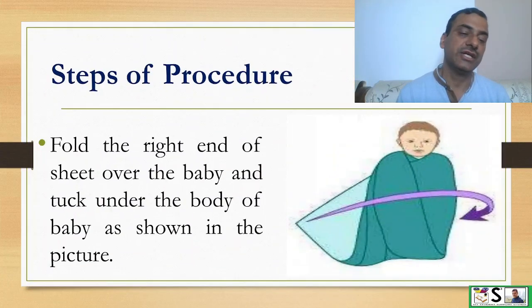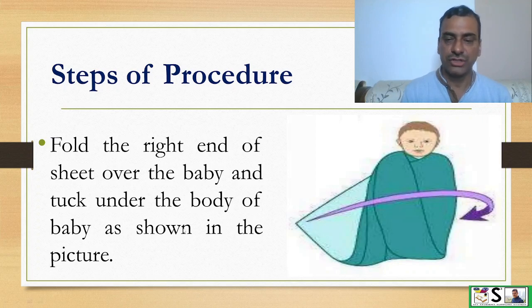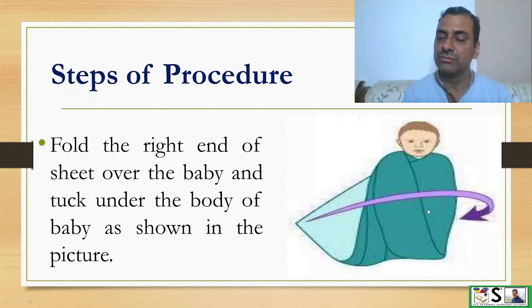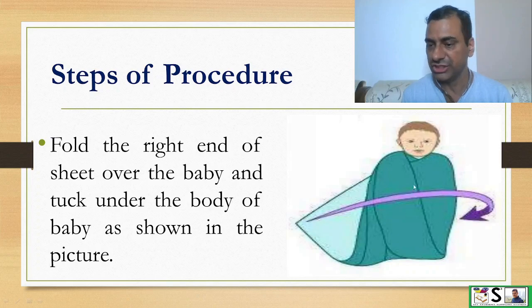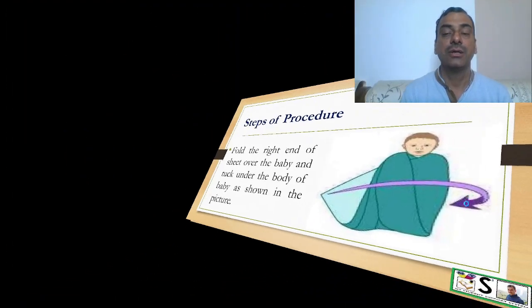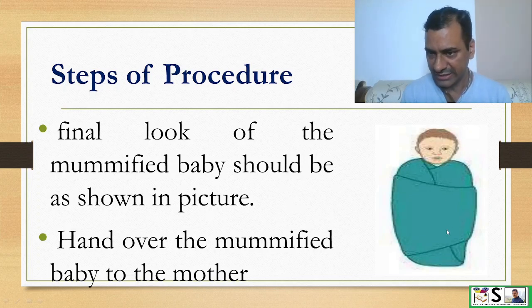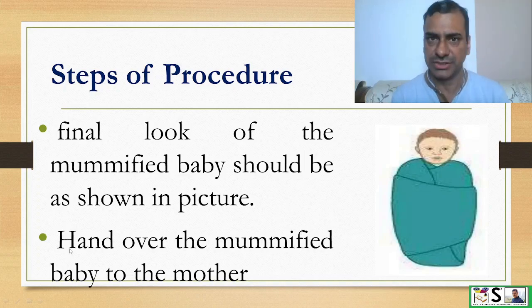Fold the right end of the sheet over the baby and tuck under the body as shown in the picture. Now this side will go towards this, and the remaining part of the sheet will go under the baby. The final look of the mummified baby should look like this. Now hand over the mummified baby to the mother.